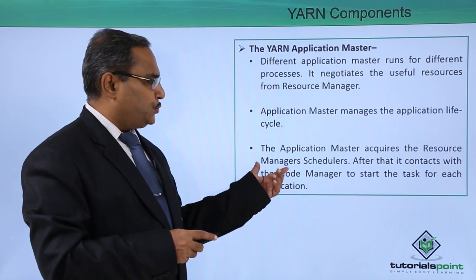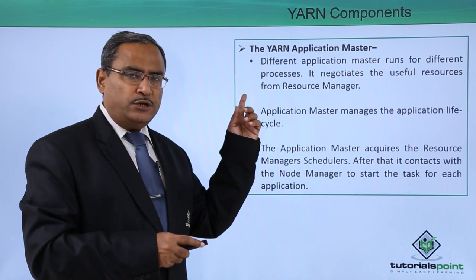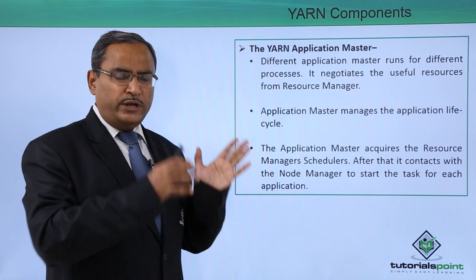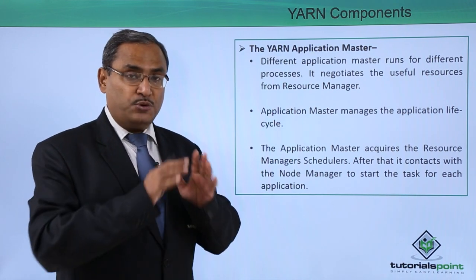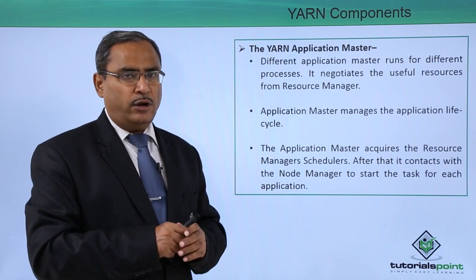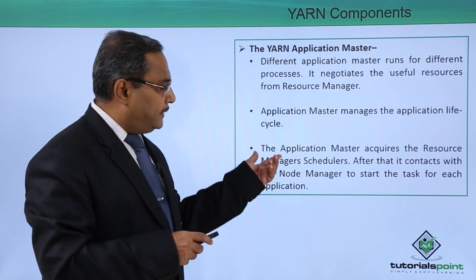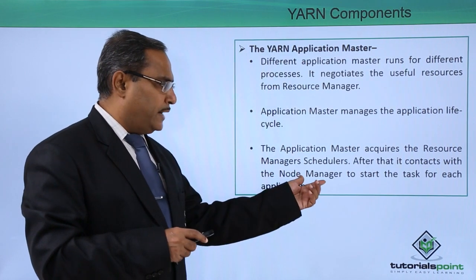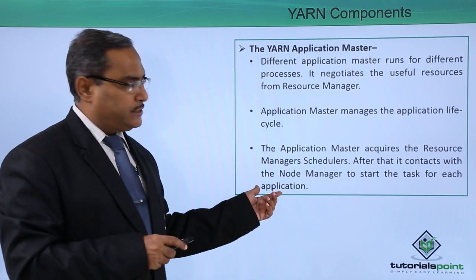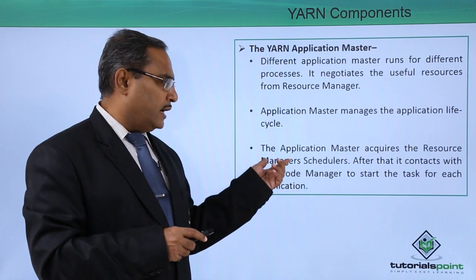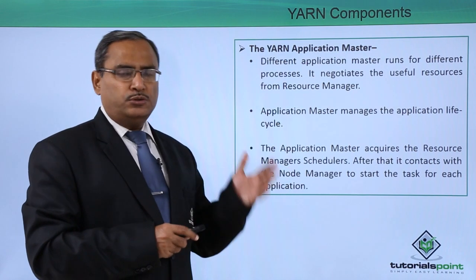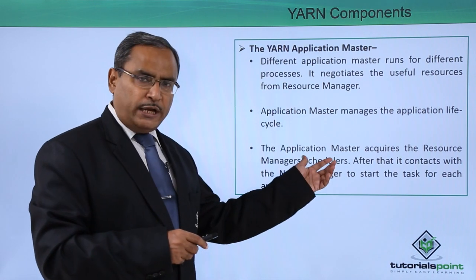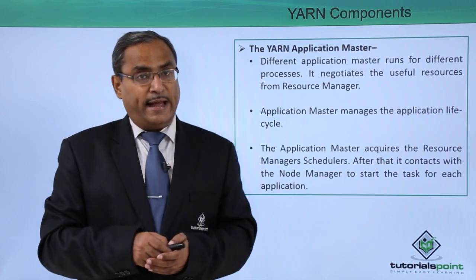The application master acquires the resource manager's scheduler. The scheduler determines which resources will be allocated to which application, without doing any tracking or monitoring. After acquiring the scheduler, the application master contacts the node manager to start the task for each application. So for each application, it first communicates with the resource manager so that resources can be allocated, and then communicates with the node manager to start the respective tasks.